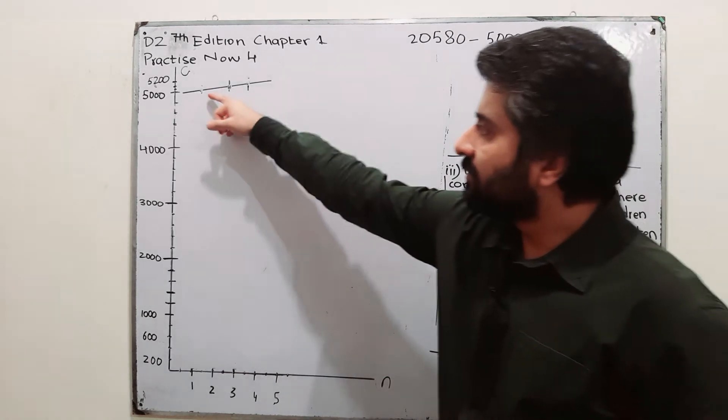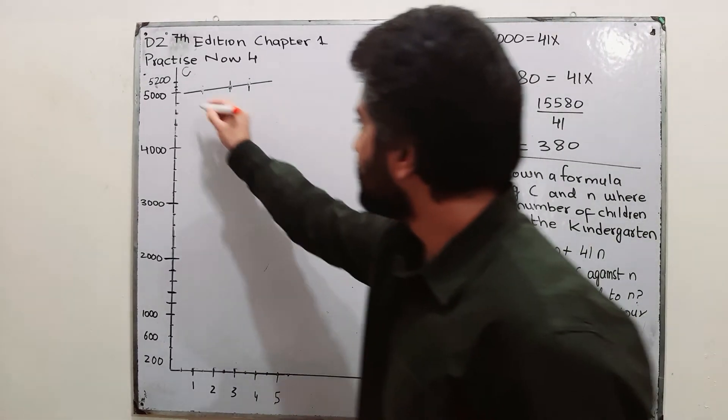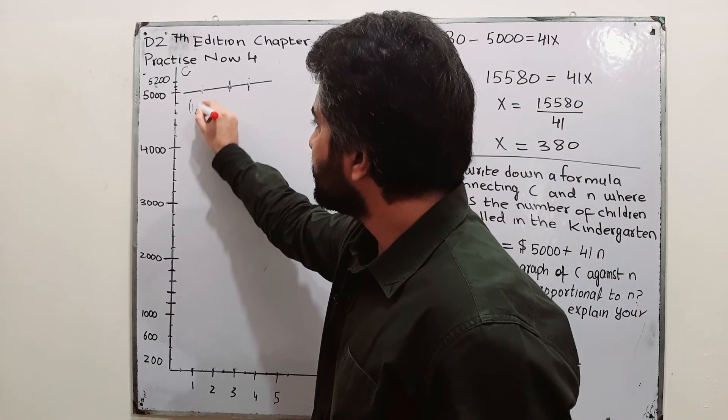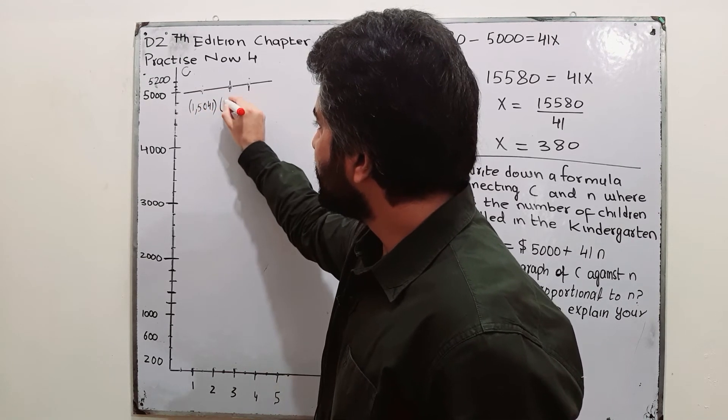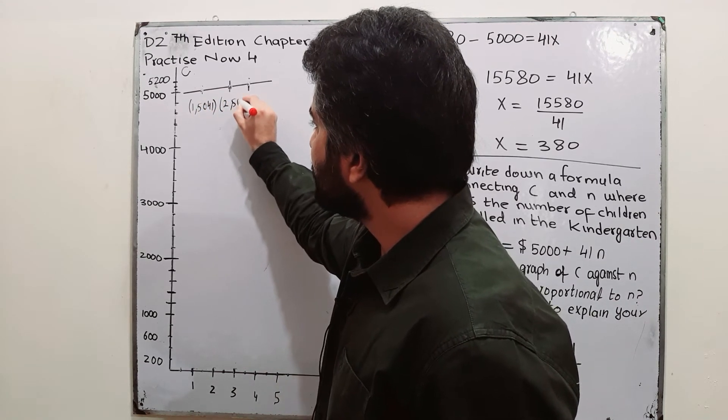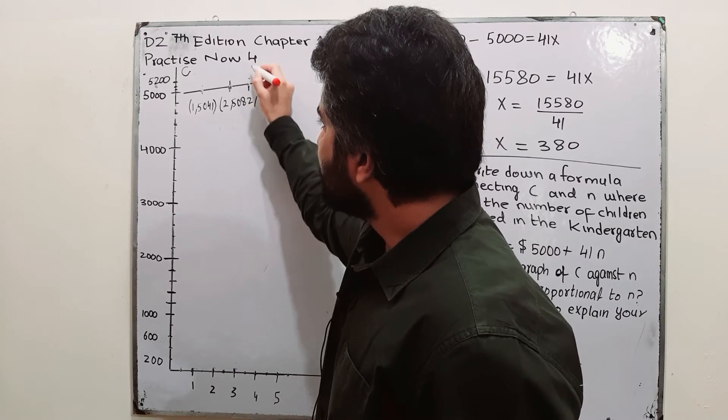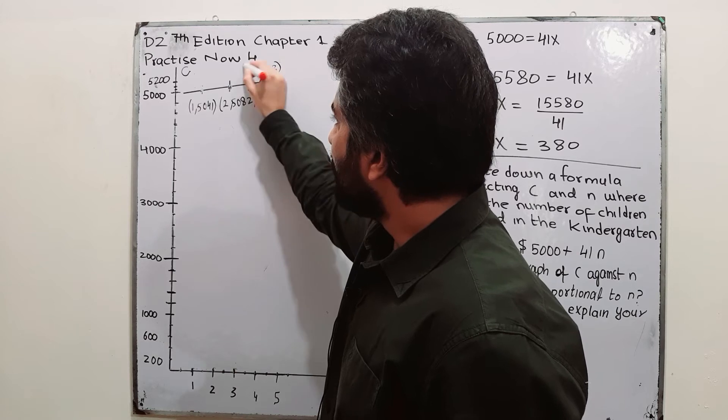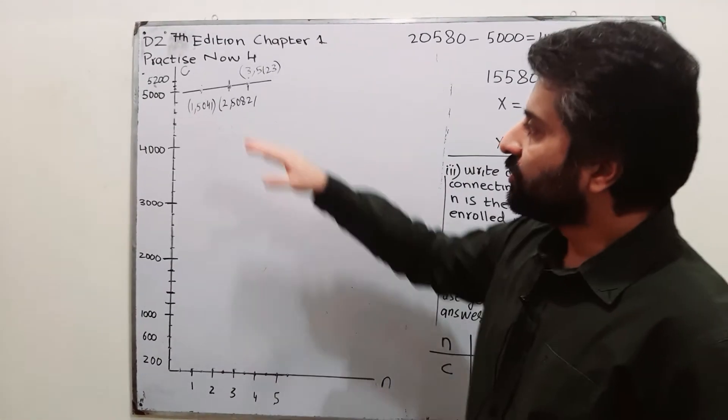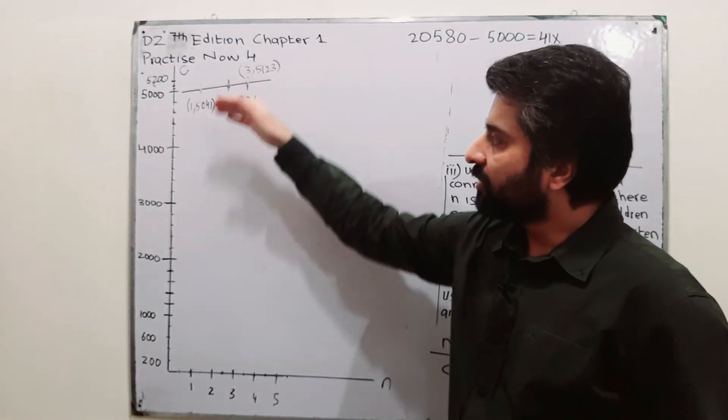So, I have plotted these respective values. This ordinate is 1 on X axis and 5041 on Y axis. This one is 2 on X axis and 5082 on Y axis. This is 3 on X axis and 5123 on Y axis. So, in this way, you can plot the graph.